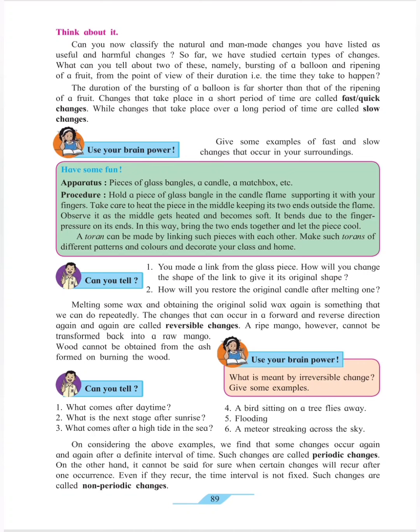Next is reversible change. Changes that can occur in a forward and reverse direction again and again are called reversible changes. For example, we take a wax cube and turn it into candles. If the candles are no longer needed, we melt them and turn them back into a wax cube. So the wax cube can be converted into a candle, and the candle can be converted back to a wax cube — these are reversible changes.